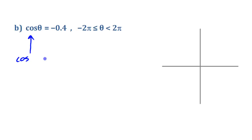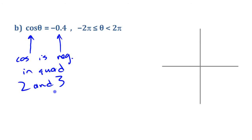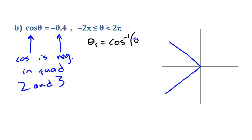The first thing to note is that cosine is a negative number. Cosine is negative in quadrants two and three, so we'll be looking there. To find the reference angle, we use the calculator with cosine inverse of positive 0.4 — notice I don't put the negative in, because it's easier to get a positive acute angle less than π/2, then work with that in each quadrant.